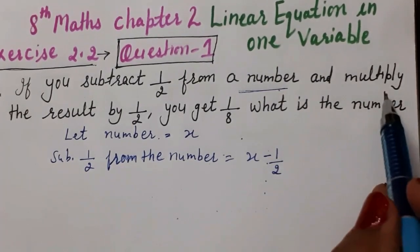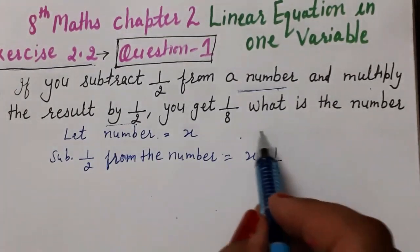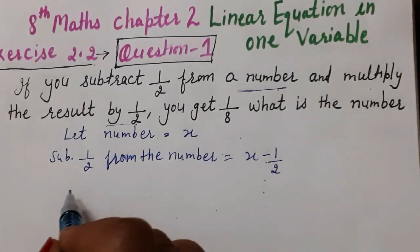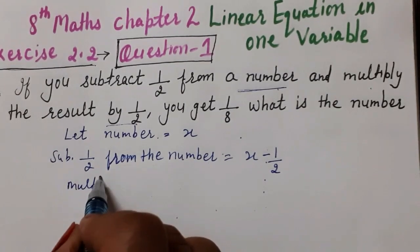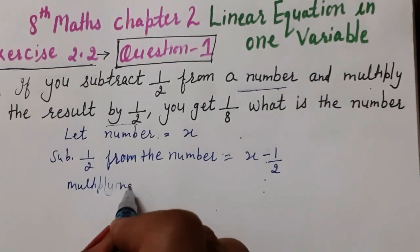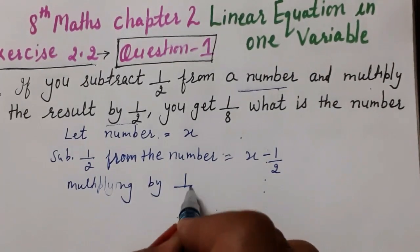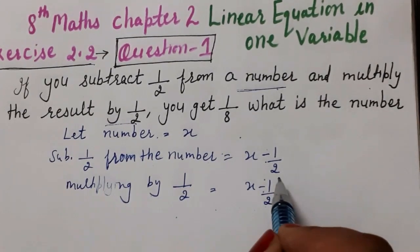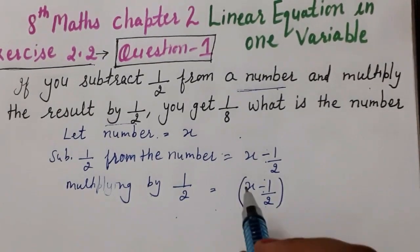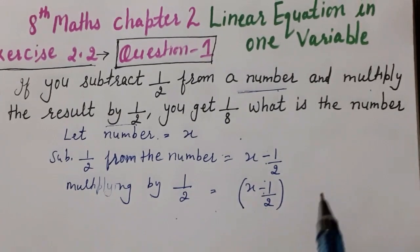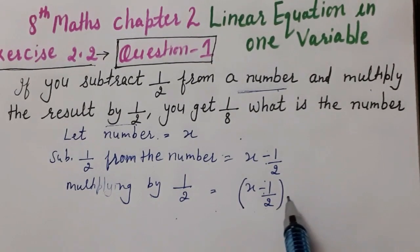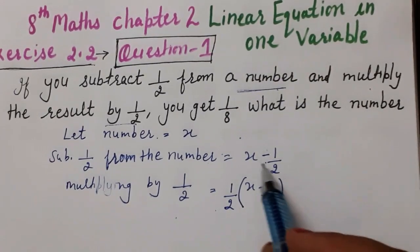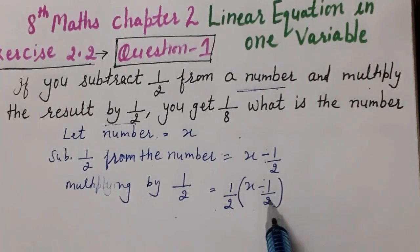उसके बाद कहा है: and multiply the result by 1/2. ये सारा result आ गया, इसको 1/2 से multiply करना है। और हमें ध्यान से करना है कि इस पूरे को 1/2 से multiply करना है — इसलिए bracket लगाने जरूरी हैं। ये binomial थी, इसलिए bracket लगाने जरूरी हैं।